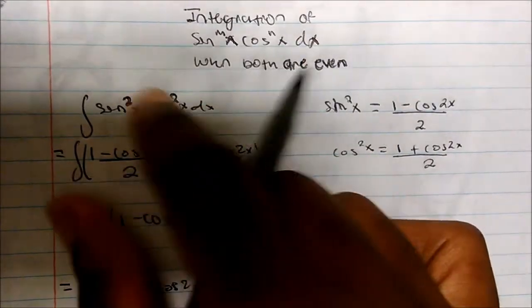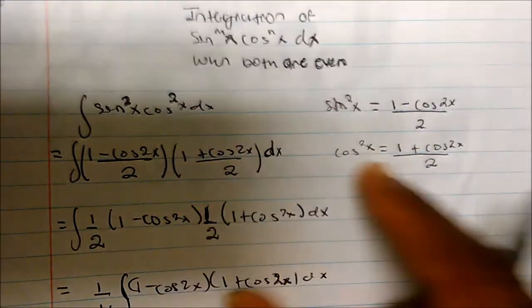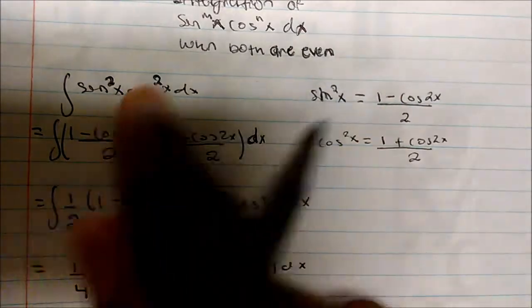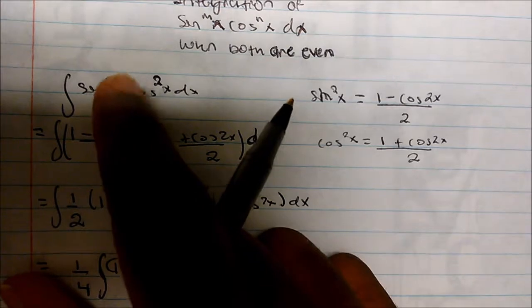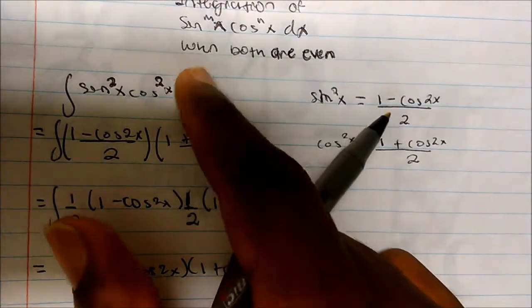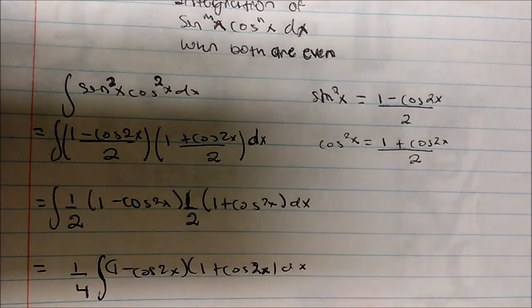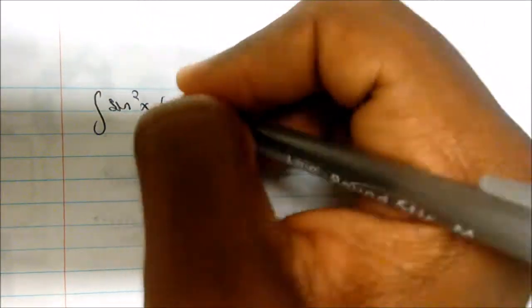The key idea is that whenever you have both even powers, you use the double angle formulas — sine squared of x and cosine squared of x. I have another problem here, and though it's probably not going to be on a test, I want you to get the idea. What if we wanted to integrate something like this? How would we set it up?